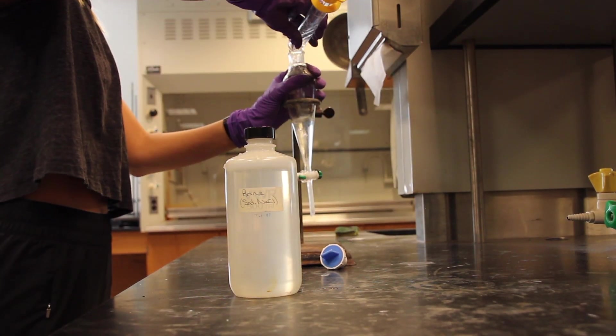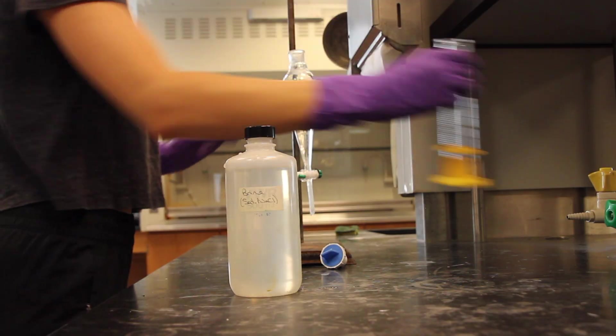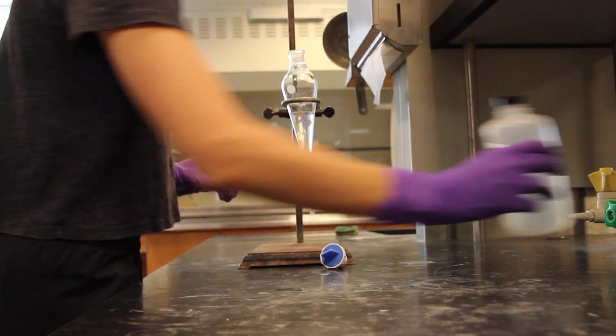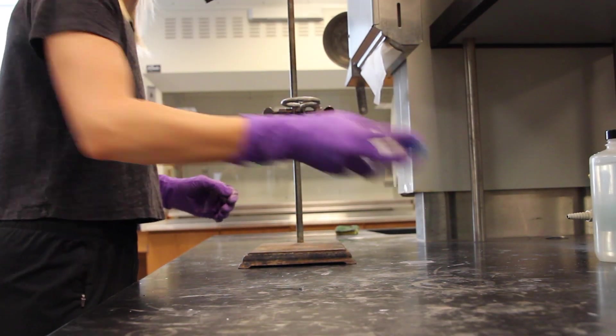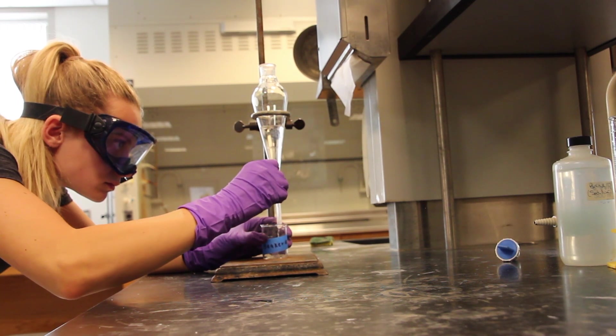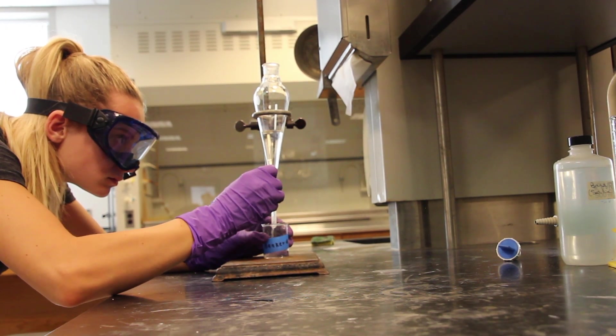Now add 15 milliliters of a saturated aqueous solution of sodium chloride called brine to the ether in the separatory funnel. Shake the mixture thoroughly, allow the layers to separate, and draw off the lower layer into a flask or beaker.